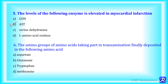MCQ 6: The amino groups of amino acids taking part in transamination are finally deposited in which amino acid? Is it aspartate, glutamate, tryptophan or methionine? The answer is glutamate, because glutamate can then undergo oxidative deamination with formation of ammonia. That is why all amino groups of amino acids are finally concentrated in glutamate.